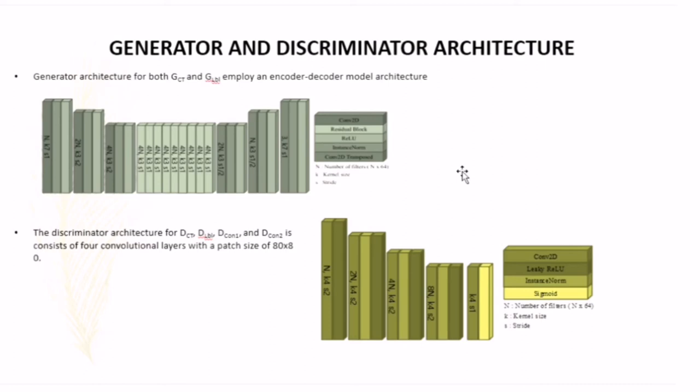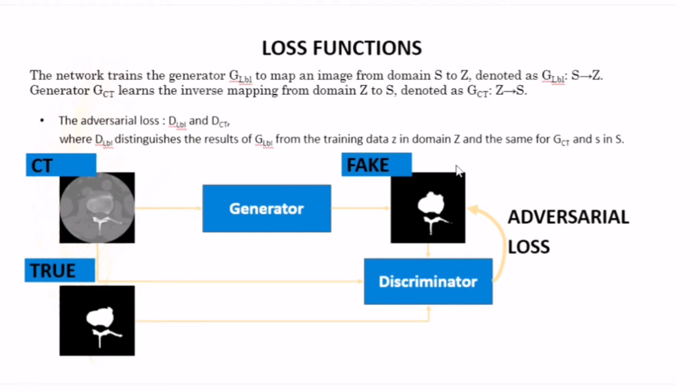For the generator and discriminator architecture, the generator architecture we employ an encoder and decoder model architecture, while for the discriminator, we use four convolutional layers with a patch size of 80 by 80. In our method, we propose several functions. The first function is adversarial loss. The adversarial loss here is D_label and D_CT. D_label tries to distinguish the result of D_label from the training dataset in domain set. Using the same logic, it works the same for D_CT and S in S. The function is to map an image from domain S to set for D_label and the opposite for D_CT.